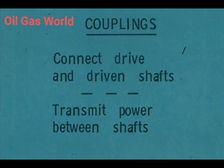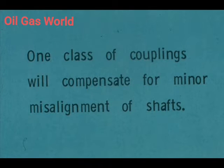As we mentioned earlier, couplings are used to accomplish two basic objectives: to connect a drive and driven shaft, and to transmit power between the shafts. However, couplings are also used for other purposes. One class of couplings is designed to compensate for minor misalignment between the rotating coupled shafts — referring only to minor misalignment, not major problems.